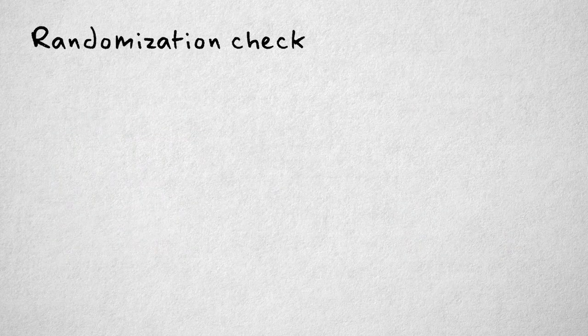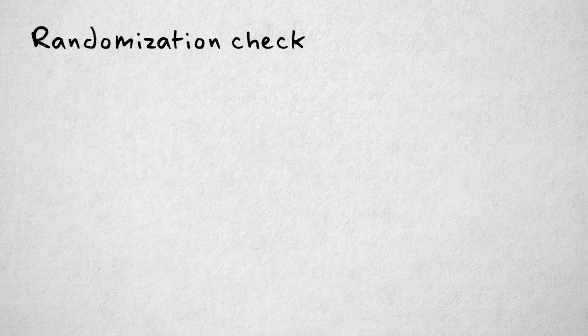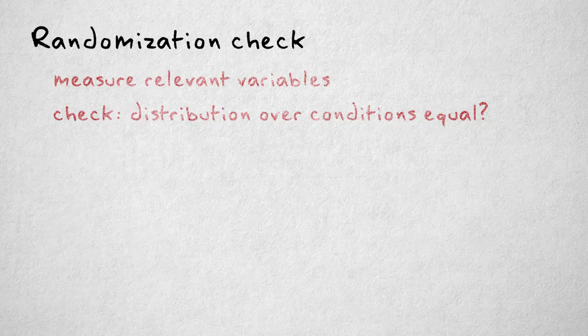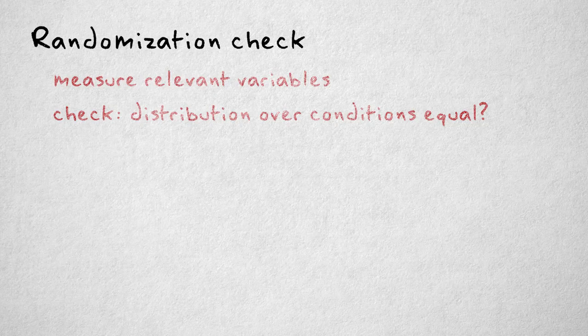One solution is to perform a randomization check. We can measure relevant background or control variables and simply check to see whether randomization worked and the conditions are the same, or whether randomization failed and the conditions differ on these variables.